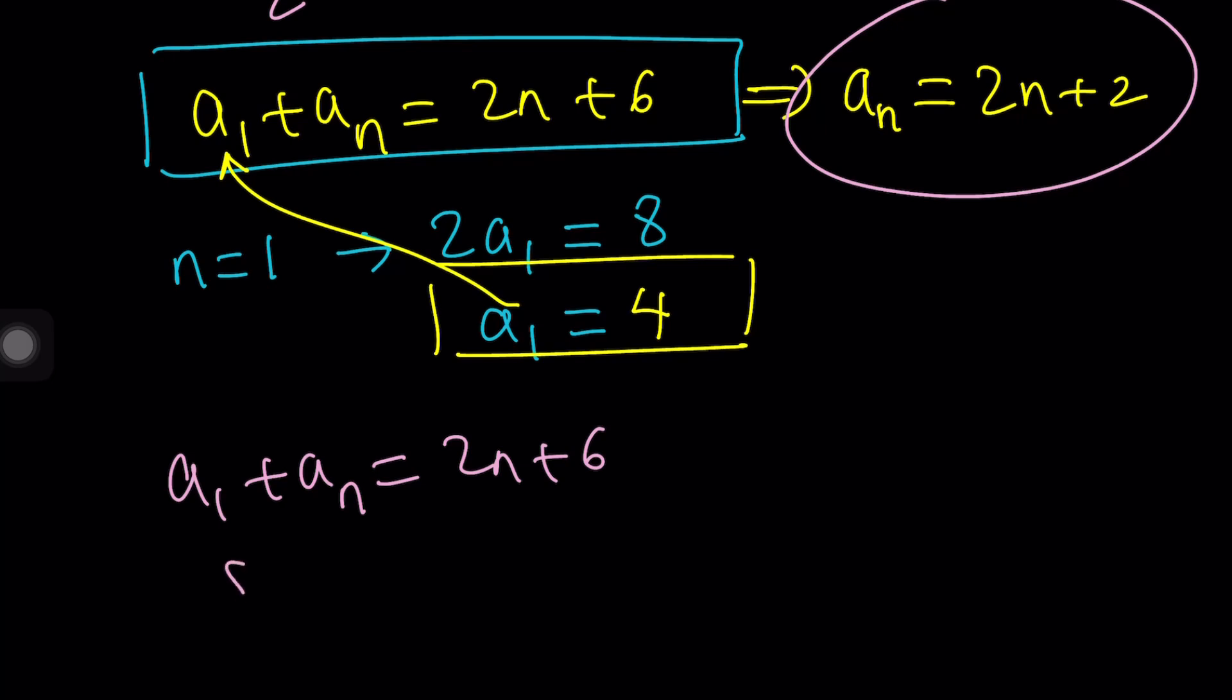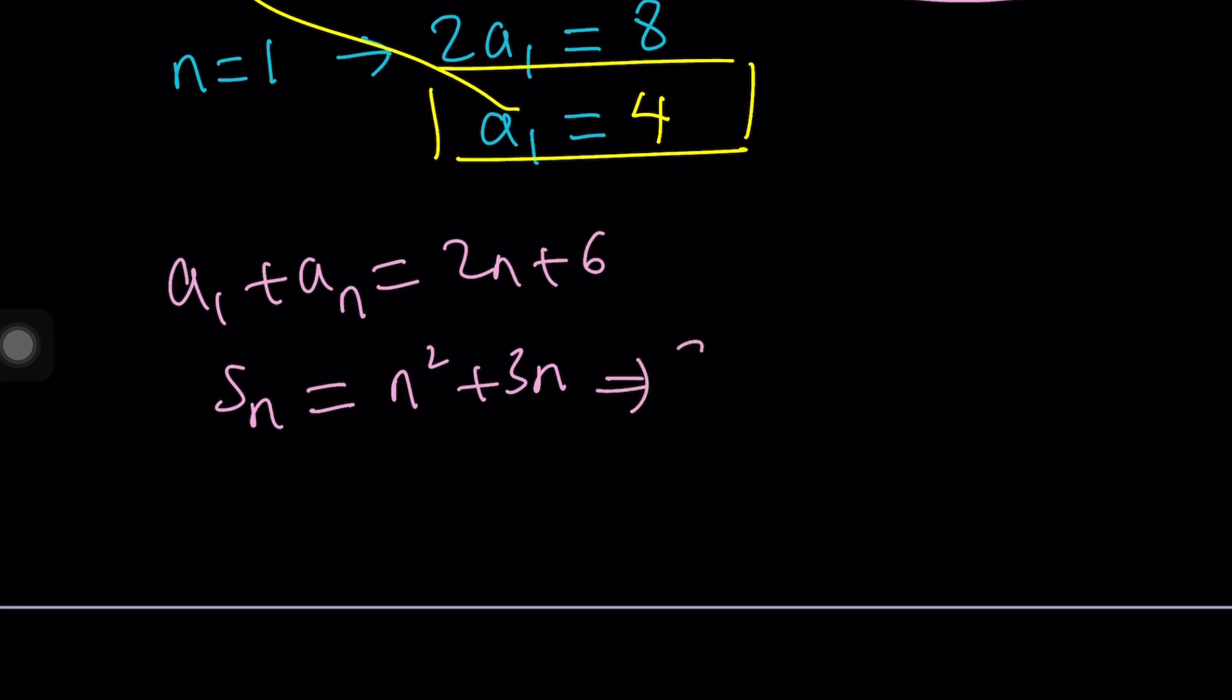Now, remember, we were given a formula for s sub n, which is n squared plus 3n. Now, what happens if you replace n with 1? You get the sum of the first 1 term, which is the first term, which is a sub 1. So s sub 1 and a sub 1 are the same. If you replace n with 1, you get 4, which is the exact same thing. You get the idea?